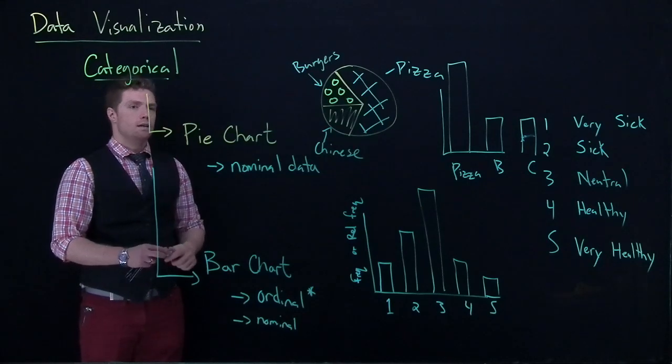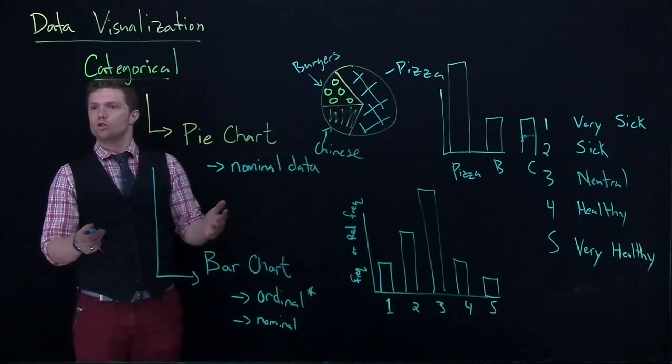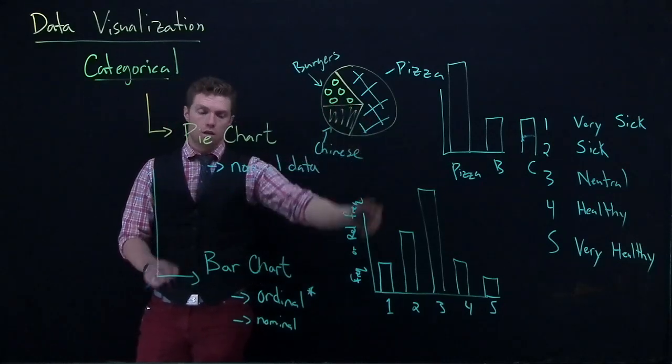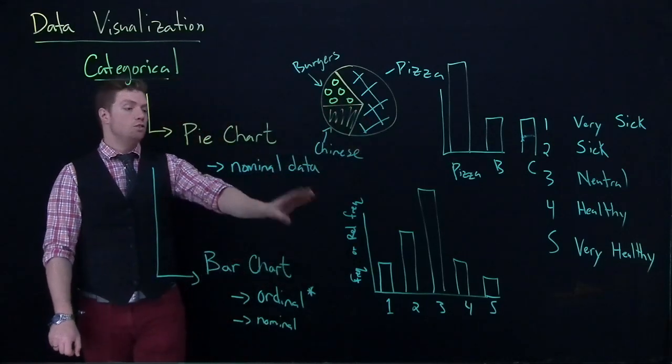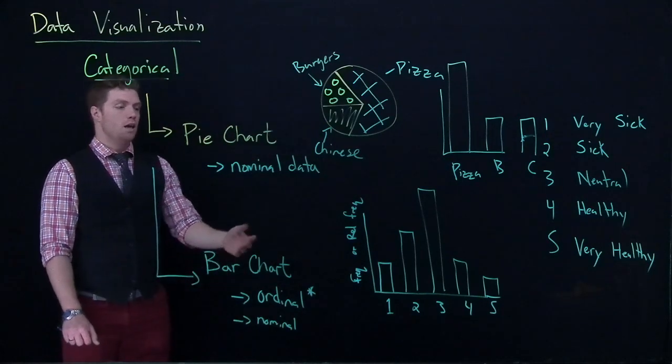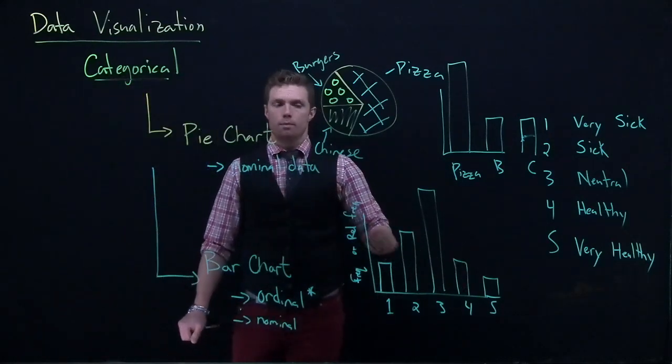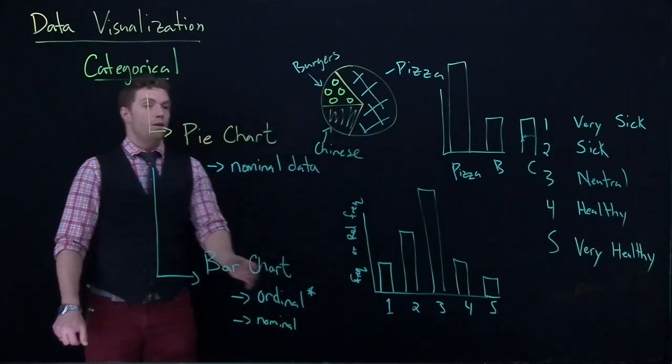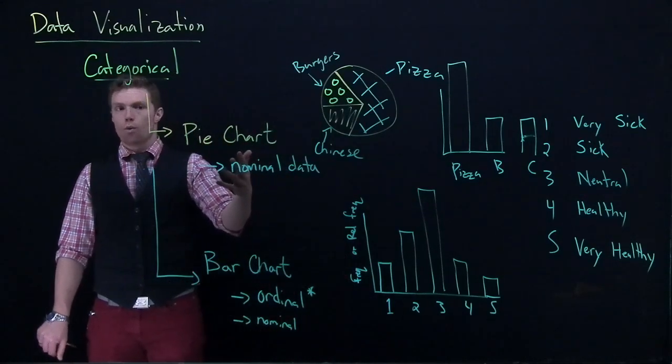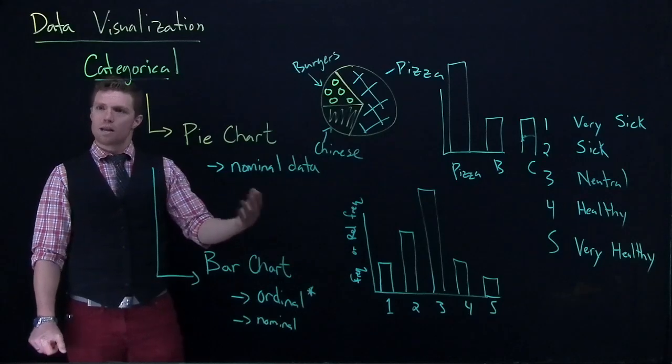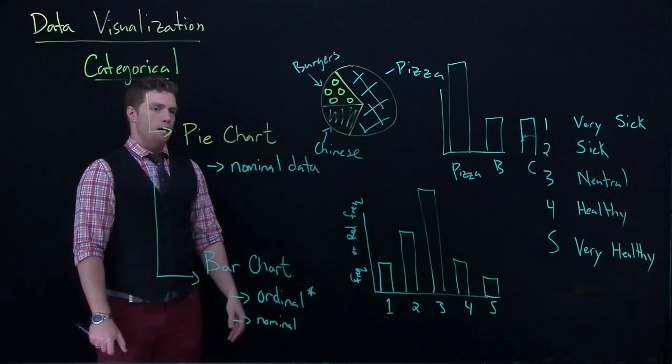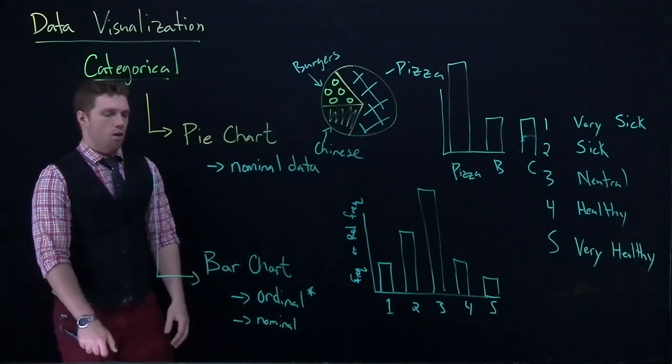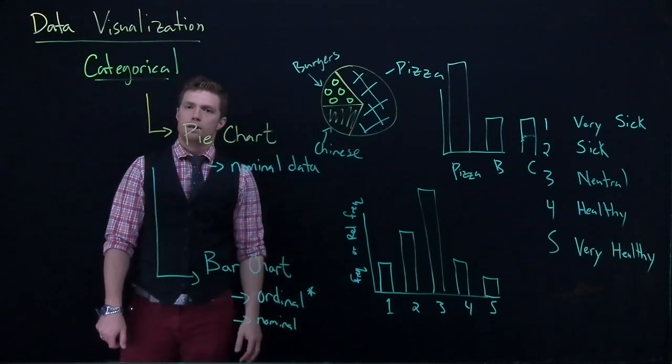Anyhow, so for our categorical data, these are kind of our two main things. If you've got nominal data, a pie chart is really good. If you have ordinal data, please use something like a bar chart. And the reason is, it gives us some extra information by being able to see the shape of the distribution. Now, is it okay, can you do ordinal data in a pie chart? Yes, sometimes it is appropriate to do. But generally, nominal data works better in a pie chart, and ordinal data works really well in a bar chart.